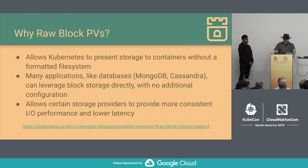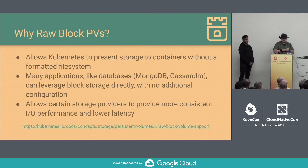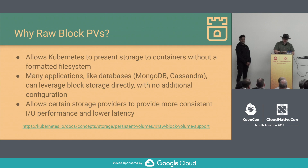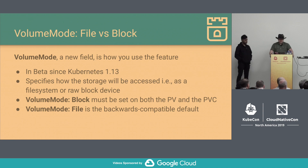Raw block PVs — why raw block PVs? It allows Kubernetes to present storage to containers without having a formatted file system on top of them. Many applications like databases or software-defined storage can leverage storage directly at the block layer, cutting out a lot of abstraction and indirection that file systems present. This typically allows for more consistent I/O performance and lower latency access to storage. The way you access this in your PVs and PVCs is through a new field called volume mode. This went beta in Kubernetes 1.13, and it specifies whether storage will be accessed with a file system or as block.